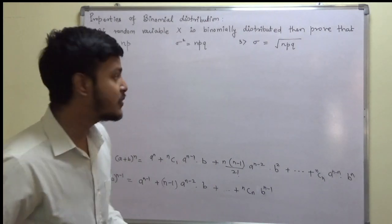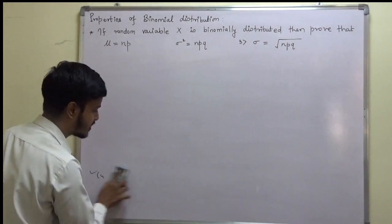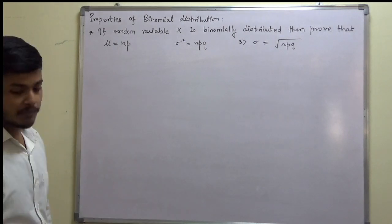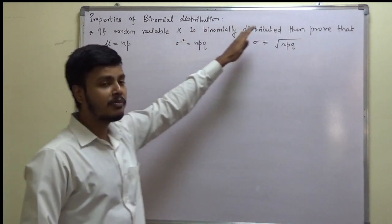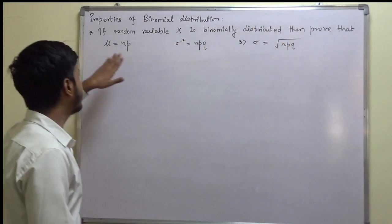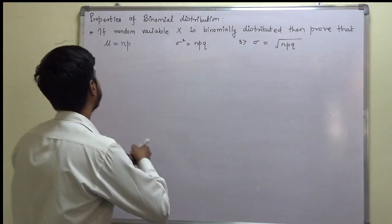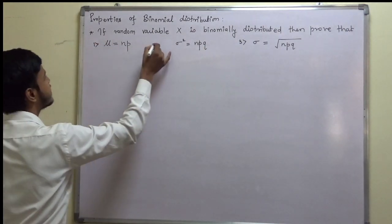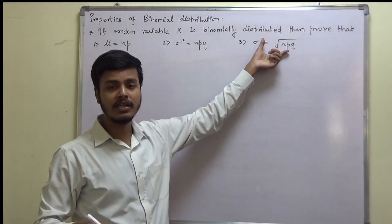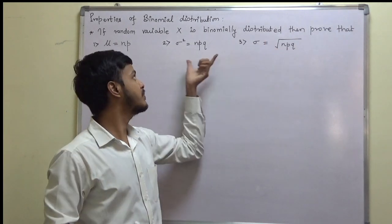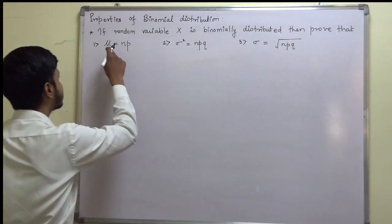So without much ado, let us prove the first property. First of all, let us see what these properties are. Properties of binomial distribution: if a random variable x is binomially distributed, then prove that mean is equal to np. The second and third parts follow. The third part is easily deducible from the second property.